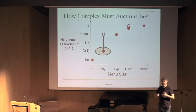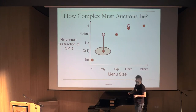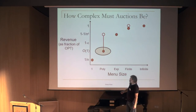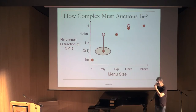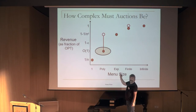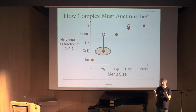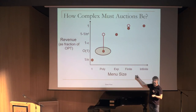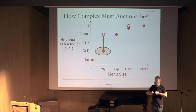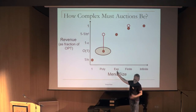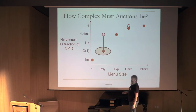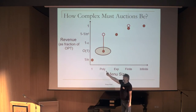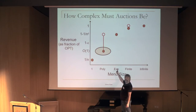Even though selling items separately or as a bundle is counted as exponential menu size, I now want to show that even polynomial menu size can still get a constant fraction of optimal revenue. This is interesting because it shows that selling separately doesn't give you more power than having polynomial menu size: there is another polynomial-size menu that achieves essentially the same revenue.